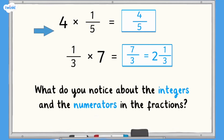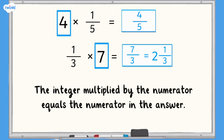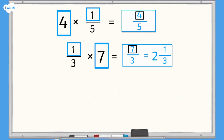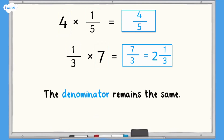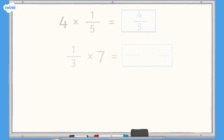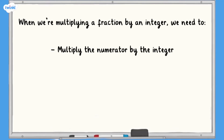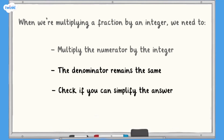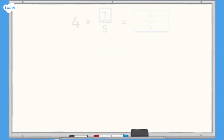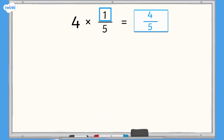What do you notice about the integers and the numerators in the fractions? The integer multiplied by the numerator equals the numerator in the answer — so 4 multiplied by 1 equals 4, and 1 multiplied by 7 equals 7. The denominator remains the same. When we're multiplying a fraction by an integer, we multiply the numerator by the integer and keep the denominator the same. We might then need to simplify the fraction or convert it to a mixed number. So far we've looked at multiplying unit fractions where the numerator is 1.